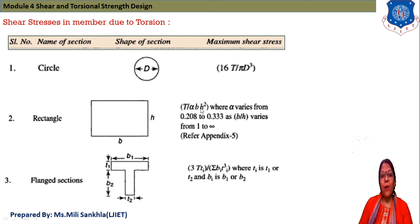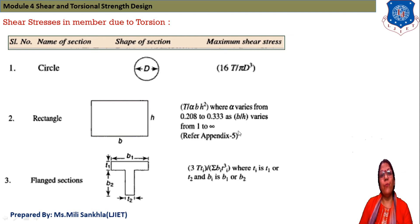For a rectangular section with width B and height H, the equation for maximum shear stress is τ = T / (α B H²), where α varies from 0.208 to 0.33 as the ratio B/H varies from 1 to infinity.